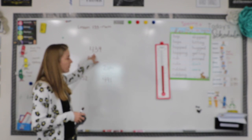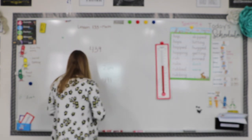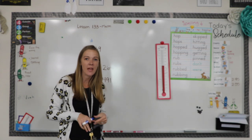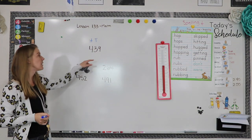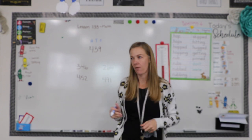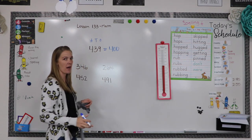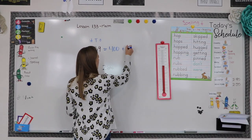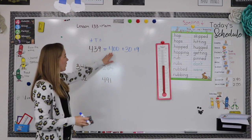Look at this number: 439. What digit is in the hundreds place? The four. The four is in the hundreds place. Which number is in the tens place? The three. And which one is in the ones place? The nine. If I was going to write this in expanded form, I would write it as 400 — don't forget your two zeros — plus 30, because there are three tens, plus 9. So 400 plus 30 plus 9 equals 439.